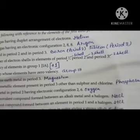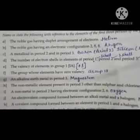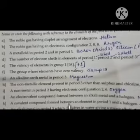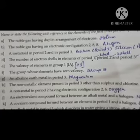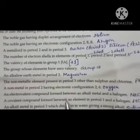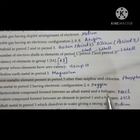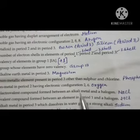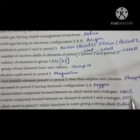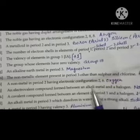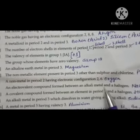A non-metal in period 2 having electronic configuration 2,6 is oxygen. The electrovalent compound formed between an alkali metal and a halogen is sodium chloride — sodium is an alkali metal and chlorine is a halogen, so NaCl is an electrovalent compound. You can also write KCl since no specific period is mentioned.